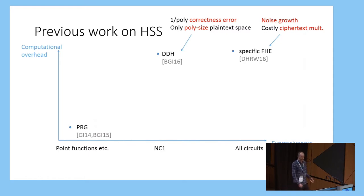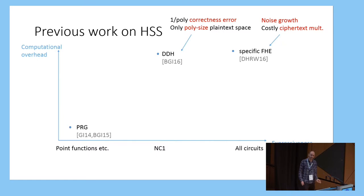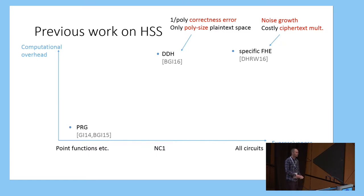On the downside, from a practical point of view, this is still not really very efficient. In particular, it has some kind of inherent non-negotiable correctness error from applying the homomorphic evaluation procedure, and to handle this and make it reasonably small, you have to add a lot of extra computation. On top of that, the plaintext space is also limited to be only of polynomial size.